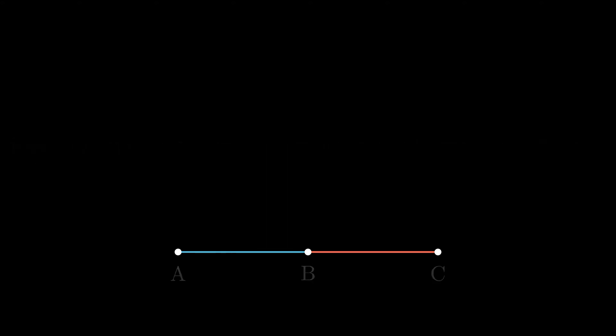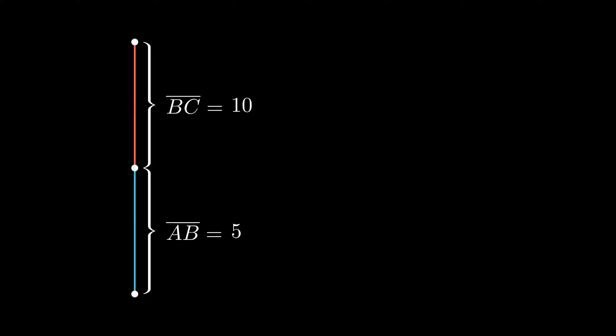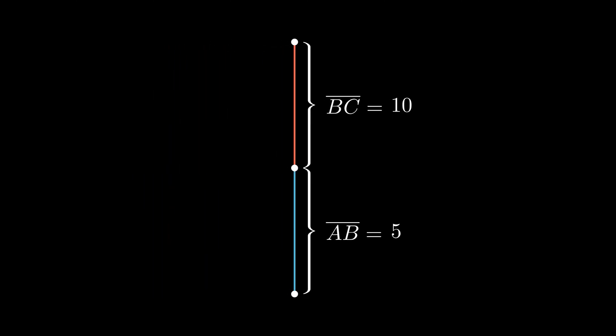To get an intuitive sense of this statement, let's assign some values to line segments AB and BC. If line segment AB equals 5 and line segment BC equals 10, we can use the Segment Addition Postulate to deduce that line segment AC equals 15.